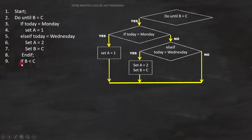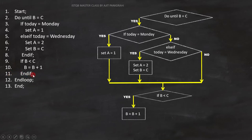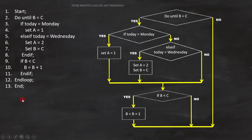Line number 9 is 'if B is smaller than C.' It is a condition, so we can represent it like this. If this condition becomes true, line B equals B plus 1 will execute, and since it is a statement, we can represent it like this on the flowchart. Line number 11 is 'end if,' and line number 12 is 'end loop,' and we can represent it like this. The last line is 'end' — it's not required to put on the graph. With this, the flowchart is complete.